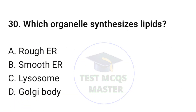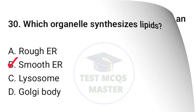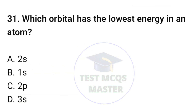Question number thirty: which organelles synthesize lipids? The correct option is B, smooth ER. Question number thirty-one: which orbital has the lowest energy in an atom? The correct option is B, 1s.